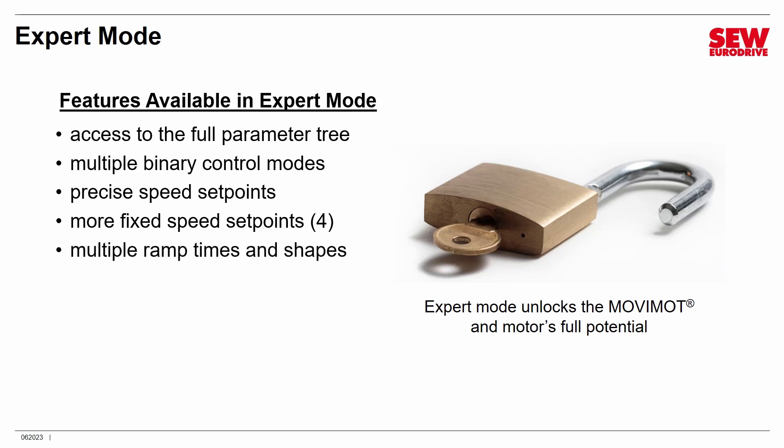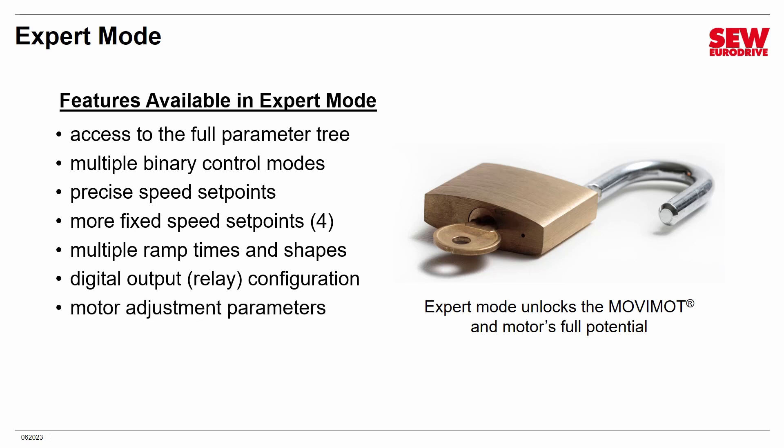You also get more control over your ramps. In Easy Mode, you basically have just a single ramp value set with the T1 dial, giving you the same up and down ramp times. In Expert Mode, you can have independent up and down ramps, and you can also alter the ramp's shape. You have more control over the single digital output — the relay contact. In Easy Mode, the relay contact simply indicates whether the Movimot is ready or not, but you can assign the relay to other status signals.